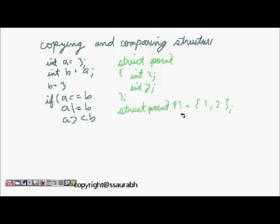Struct point p2 is equal to 3 comma 4, and struct point p3 is equal to 1 comma 2.